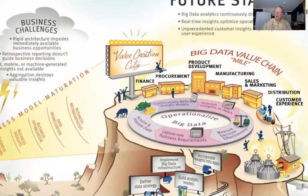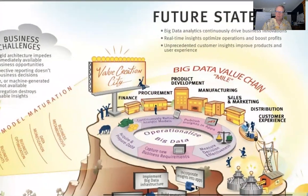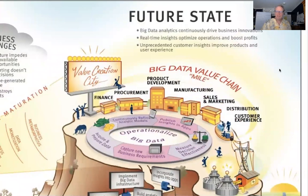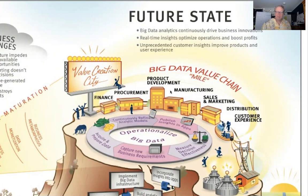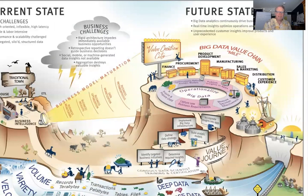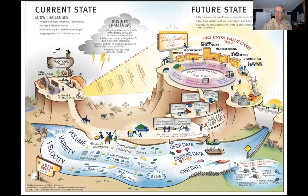Operationalization — how do we take the data and interweave it into our value creation processes so that we realize these benefits in the upper right-hand side: continuously driving business innovation, delivering real-time insights that optimize operations and boost profits, and providing unprecedented customer insights that we can use to improve product performance and user experience. In summary, what I laid out over seven years ago in the big data story map is still pretty relevant today.